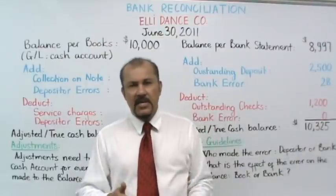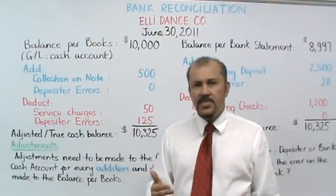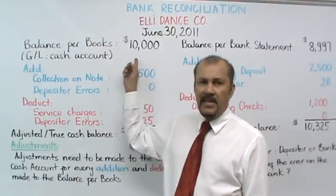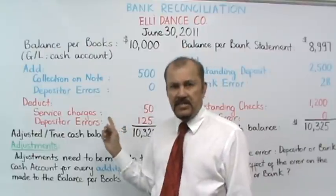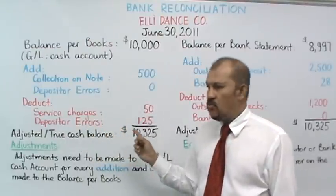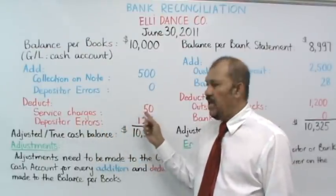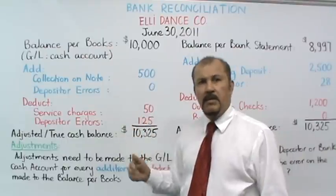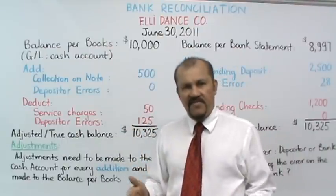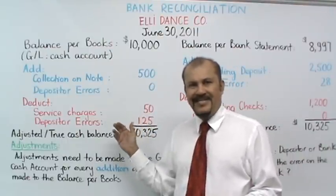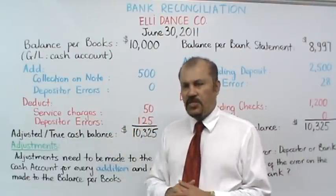However, this $50 did not come out of Ellie's book balance. So at this point in the bank reconciliation, we are adjusting Ellie's book balance downwards by $50. That's the rationale behind this deduction.